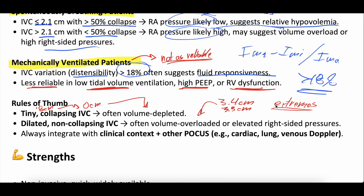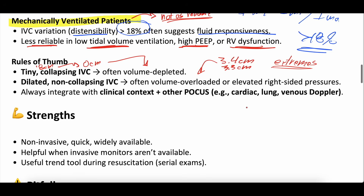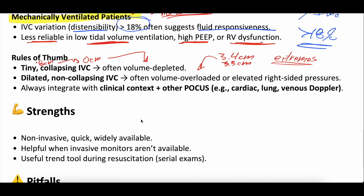In the gray zone — when it's not at the extremes — it's harder to know if this is really helpful for understanding volume status. The strengths of IVC assessment: it's non-invasive, quick, widely available, and repeatable — you could do 20 IVC assessments in a day. It's helpful when invasive monitors aren't available, such as in the emergency department or ICU without central lines. It's also useful to trend — if the IVC was super small and you resuscitate the patient and it now looks more euvolemic, you've likely caught up on volume.